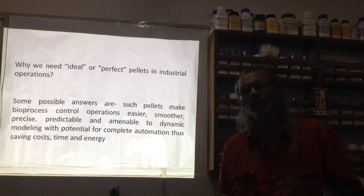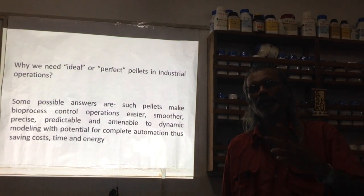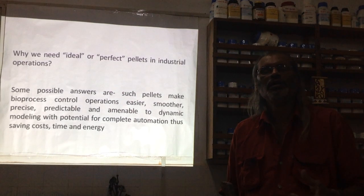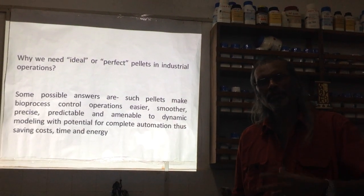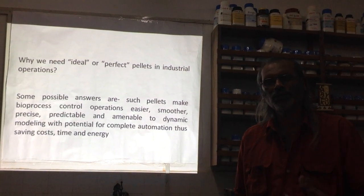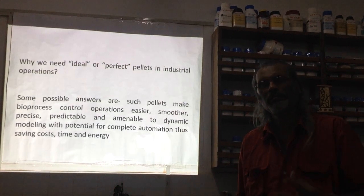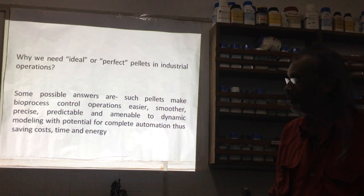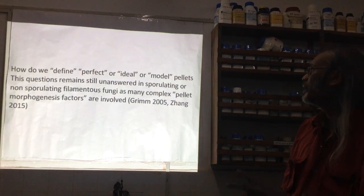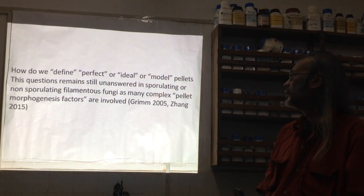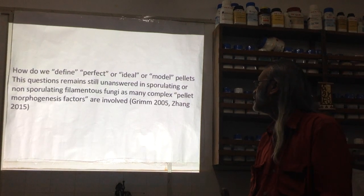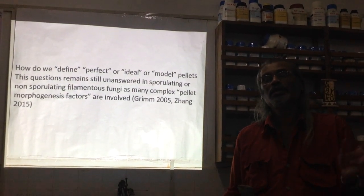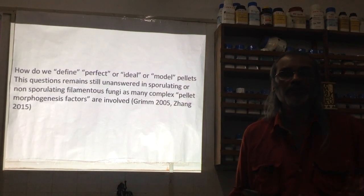We visualize that if we can predict pellet shape, size, density, population, number, and growth rate, it will be possible to automate the whole process, removing the need for a lot of labor and cost involved in monitoring. How do we then define perfect, ideal, or model pellets? This question remains still unanswered in sporulating or non-sporulating filamentous fungi — the key difference is between these two types.